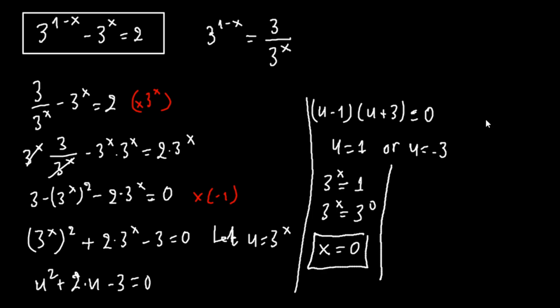On this side we have that 3 to the x equals minus 3, which is less than 0. 3 to the x cannot be a negative number, so we must reject this. It is impossible, so we reject it.